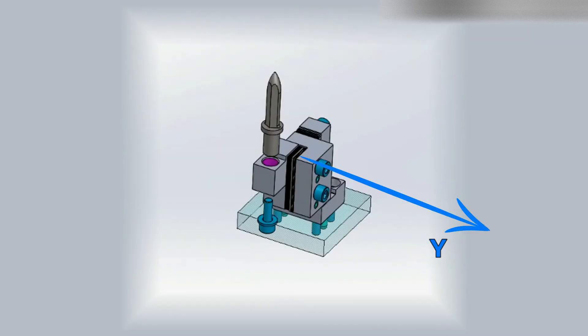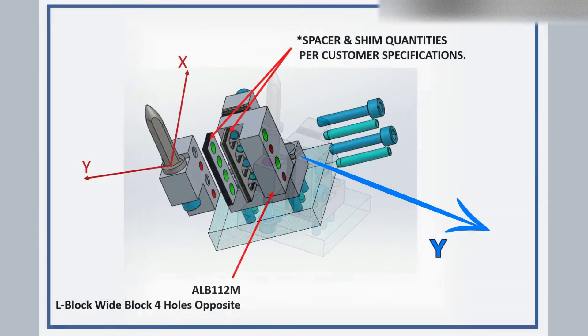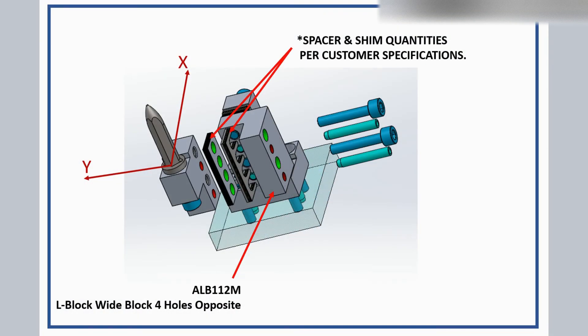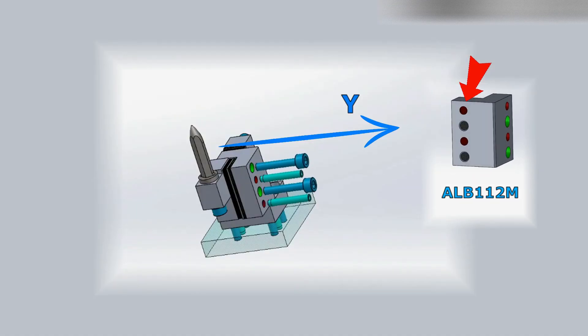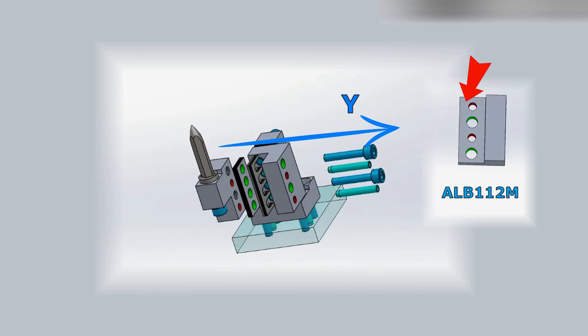Okay, Y adjustable direction. For the Y direction applied one spacer and one shim kit, as well as L block wide block 4 holes, ALB112M, and fasteners. Two socket head cap screws and two pull dowel pins.